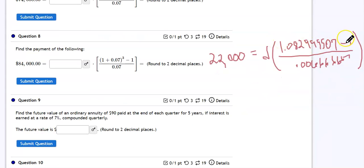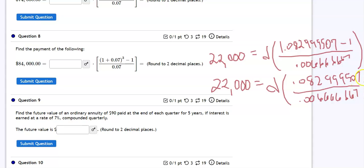All right, now on the top, let's subtract the 1 from this number right here, so we'll have 22,000 and that's just going to give me 0.082999507.